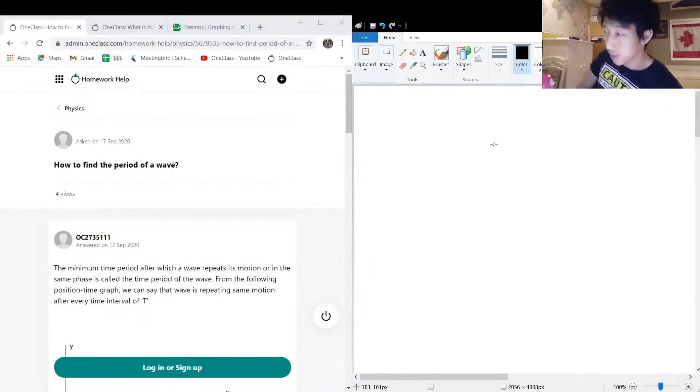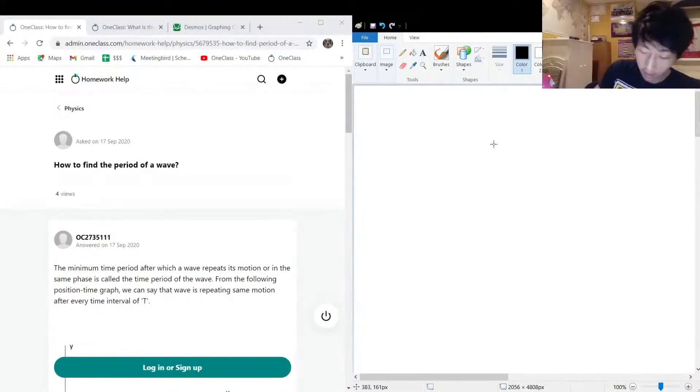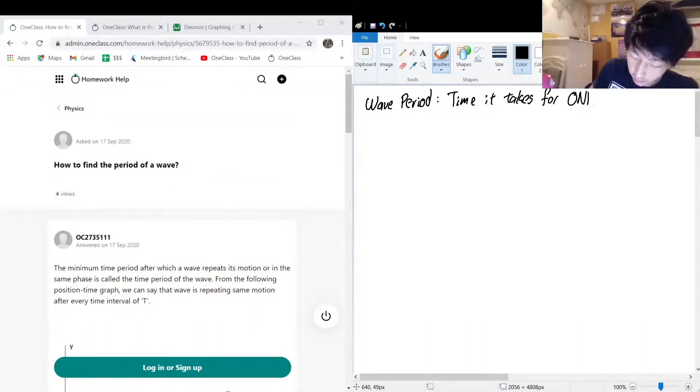Okay, so the next question we got on the menu today is asking us how do we find the period of a wave. Let's actually define the word period in terms of waves in a more concrete sense. A wave period is the time it takes for one wave cycle to complete. You could measure it as the time between peaks.